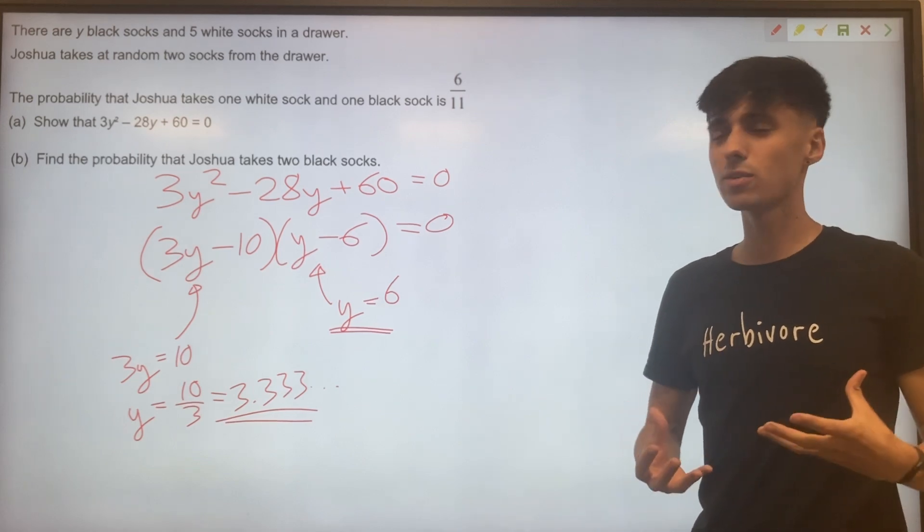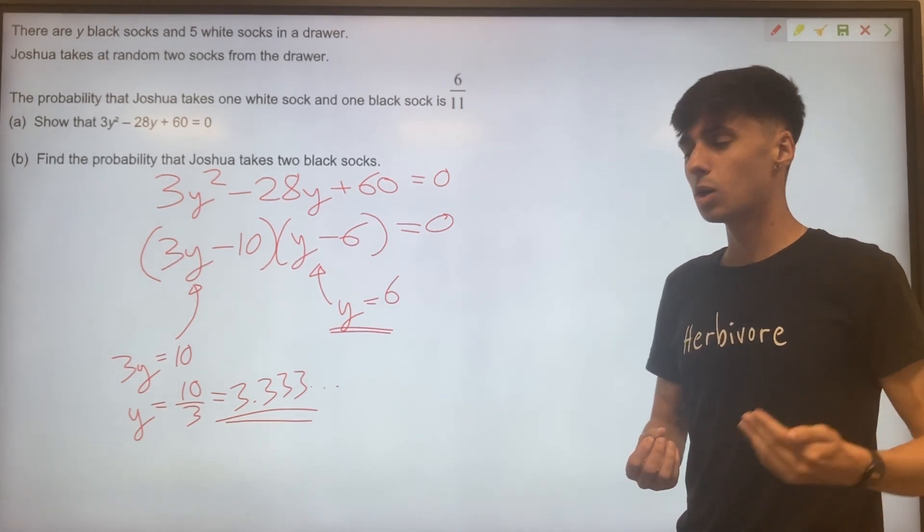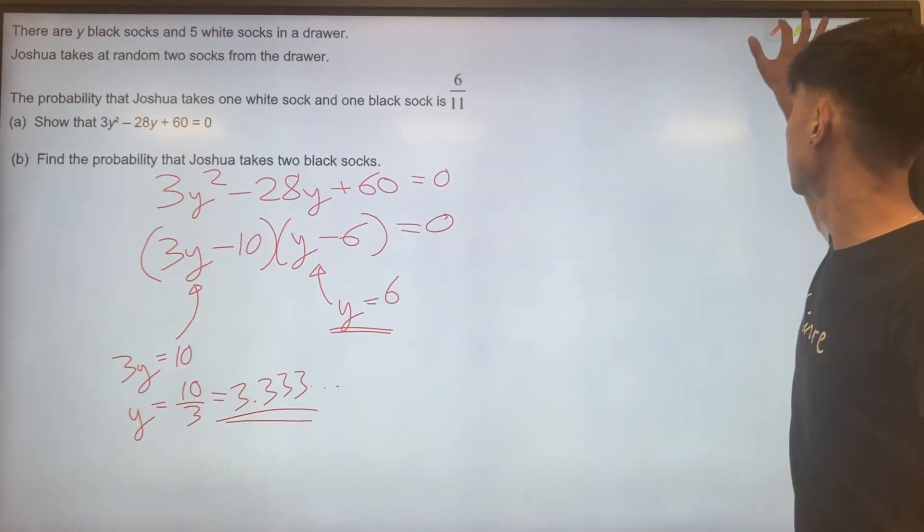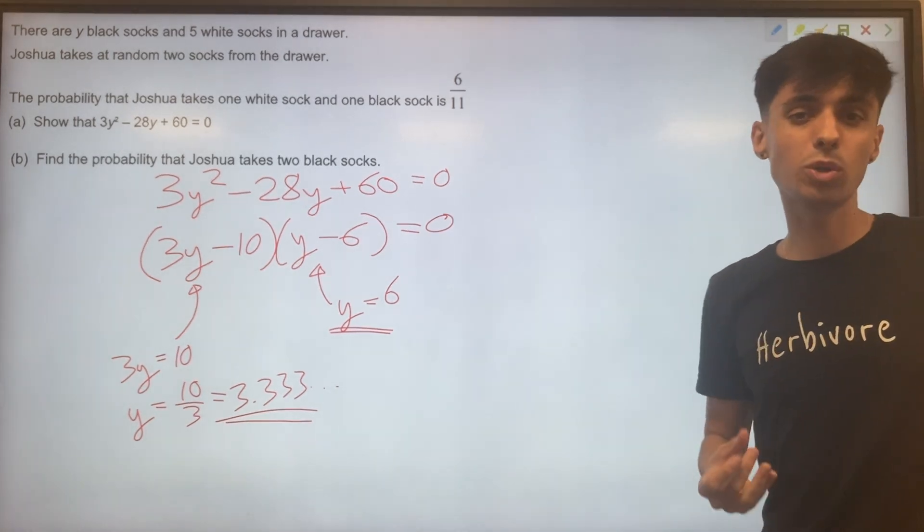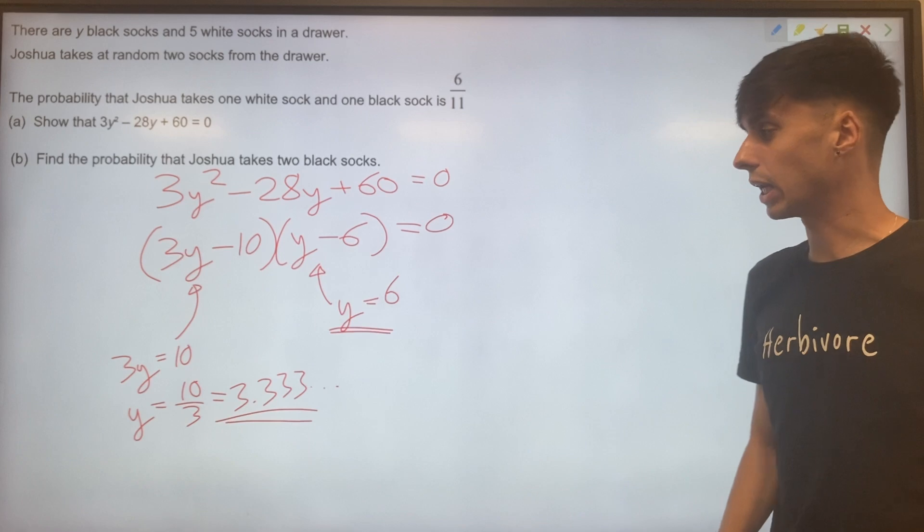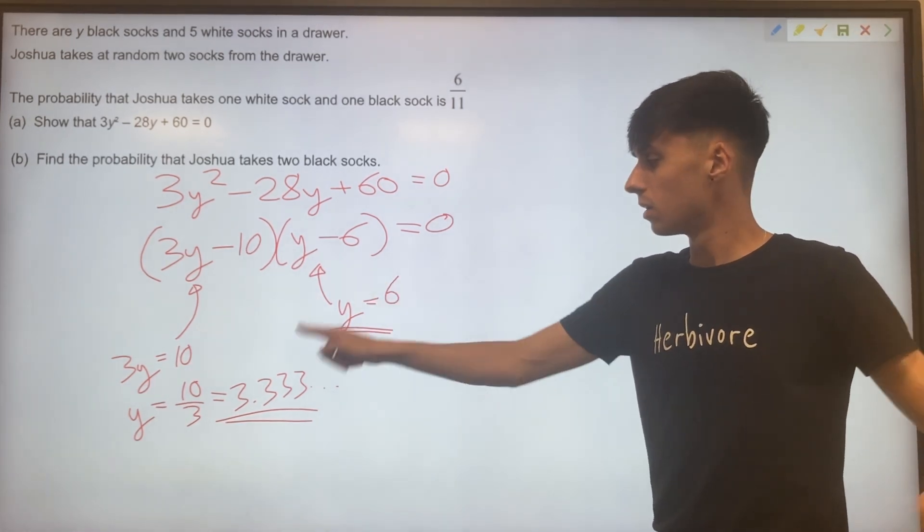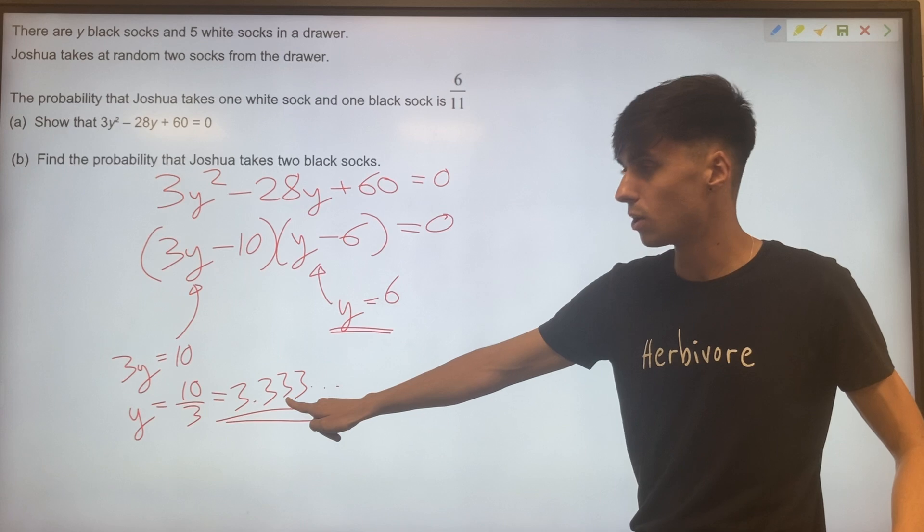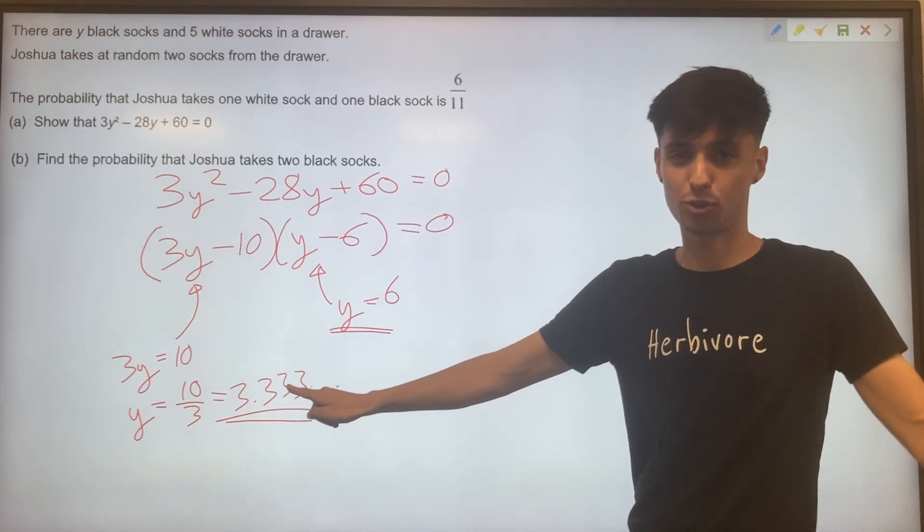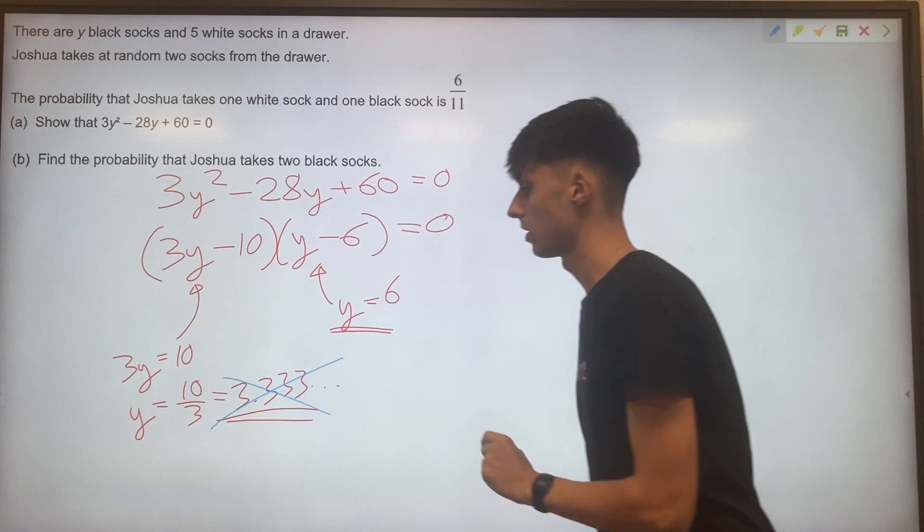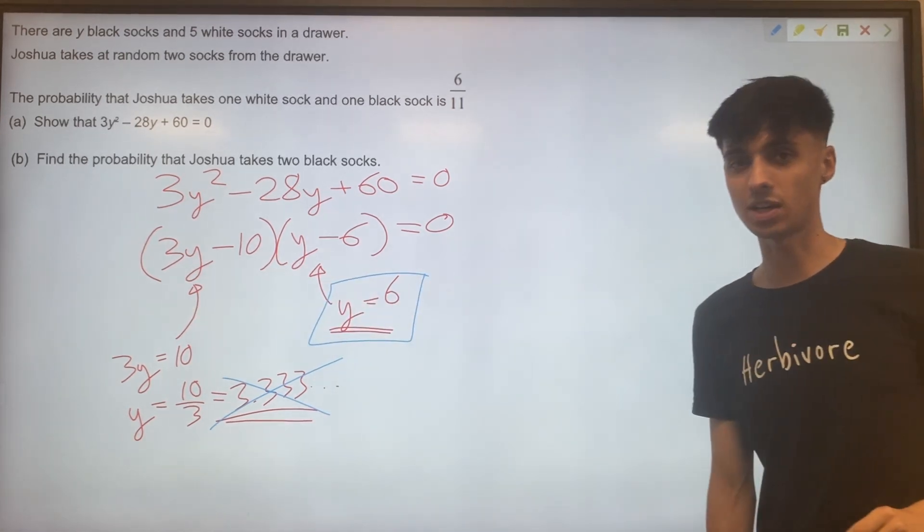Thinking about the kind of answers we should be expecting. We'd like a number of socks that Joshua has got in his drawer. So only one of these answers is acceptable. We should be looking for a positive whole number answer. This answer might be positive, but you cannot have 3.3 socks in your cupboard. So we're getting rid of this and we're only accepting y equals 6.